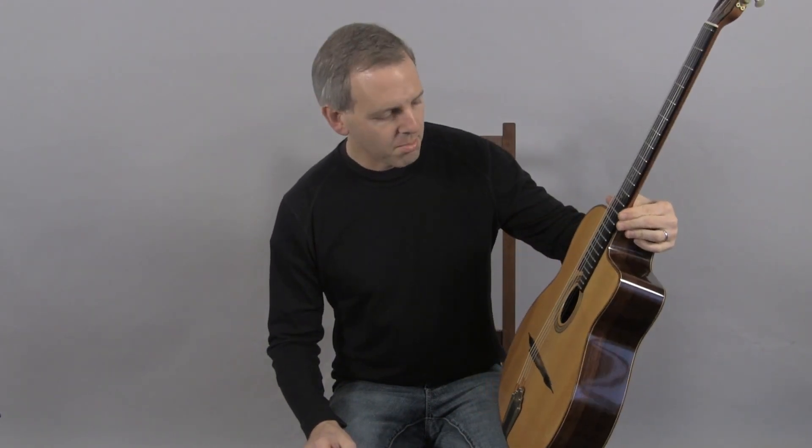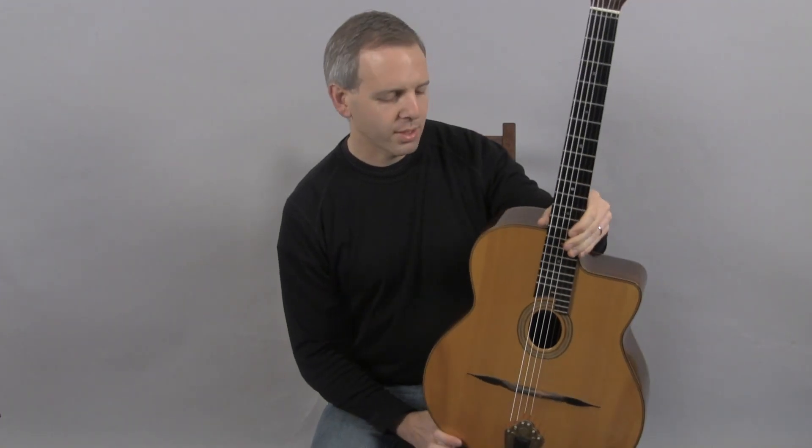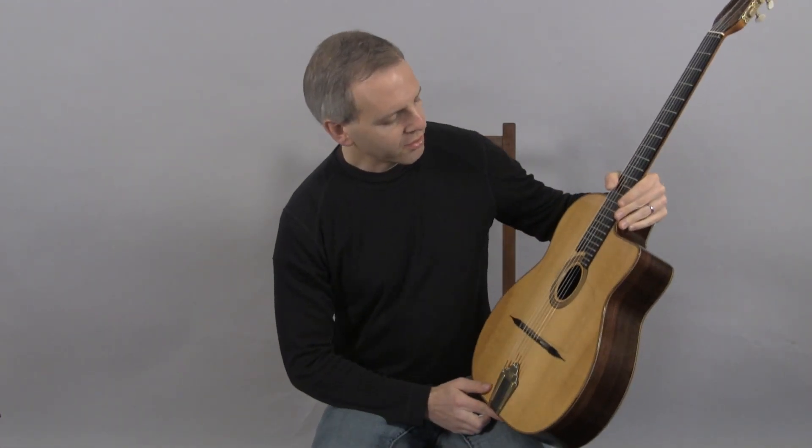This is his Model S, which is more of a Selmer type size than the older Model 10 that his father built. It has a smaller body than the earlier Favinos.